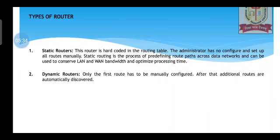Types of routers: we have static routers and dynamic routers. In static routing, routes are hard-coded in the routing table and the administrator has to set up all routes manually. Static routing is used to define route paths across data networks and can conserve LAN and WAN bandwidth. For example, if you need to send data to ten devices, you have to type each of the ten IPs manually. With dynamic routers, only the first route has to be manually confirmed and all other routes are automatically discovered. Static routing is good for small networks with five to ten devices, but for large networks with hundreds or thousands of devices, dynamic routers are a must.